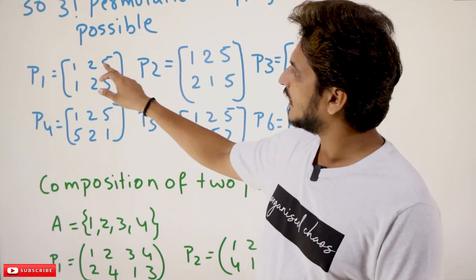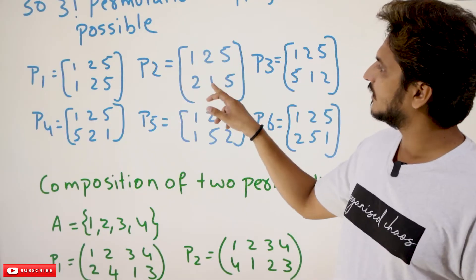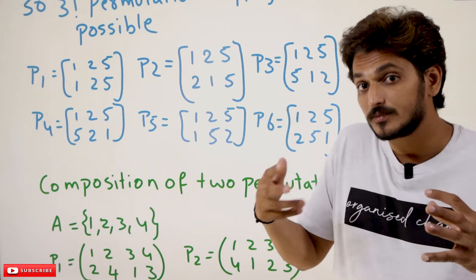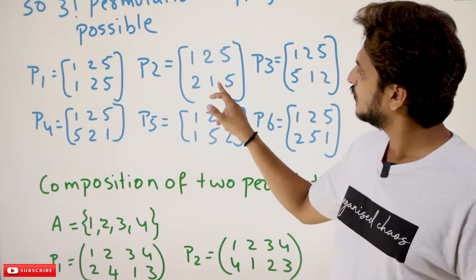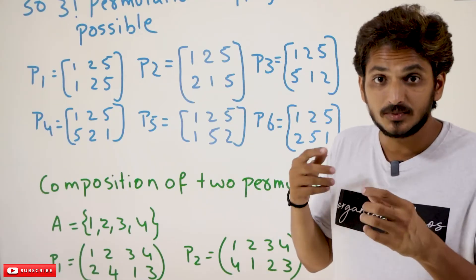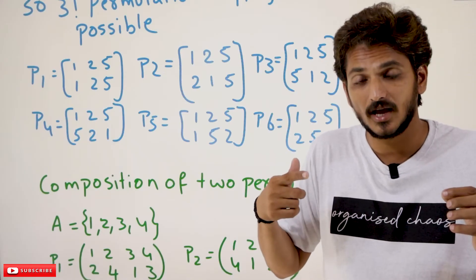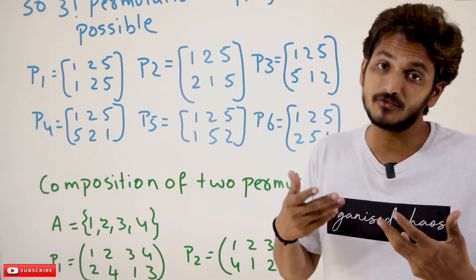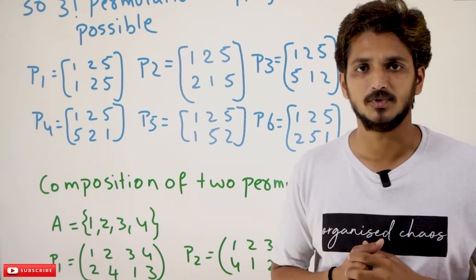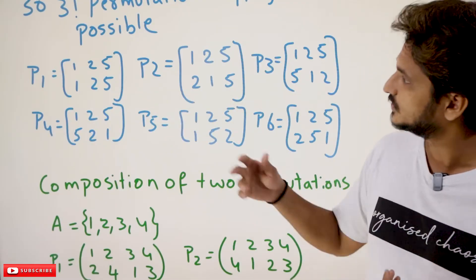Why is it 3 factorial? Let's try to understand. For example, 1 mapping to 1, 2 mapping to 2, 5 mapping to 5 — this is another permutation. How many permutations are possible? You can arrange these elements in different orders. How many ways are we going to arrange these three elements? You can arrange them in 3 factorial ways. That is why how many different permutation functions are possible — n factorial permutation functions are possible, where n is the number of elements in the set A. So these 6 are the 6 different permutation functions possible using set A.